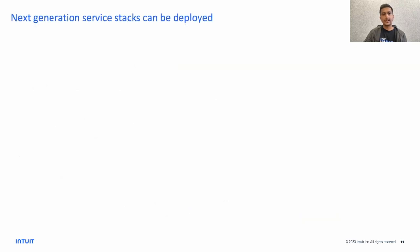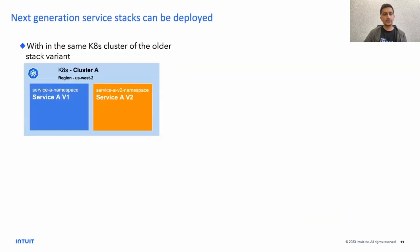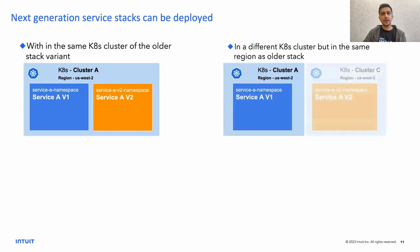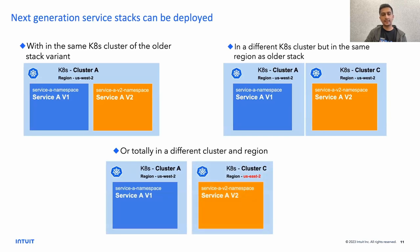Let's take an example where there was a service A running V1, and now they came up with a new stack called V2. There can be a scenario where the V2 version runs within the same K8s cluster where V1 was running but on a different namespace, or the V2 stack can run on a completely different cluster. V1 could be running on cluster A and V2 on cluster C in the same region, or even V2 on cluster C in a completely different region.